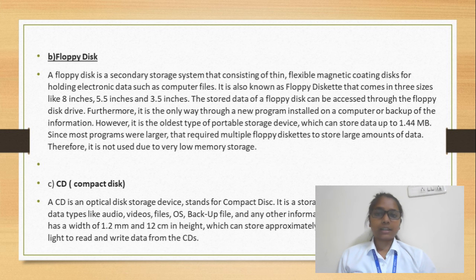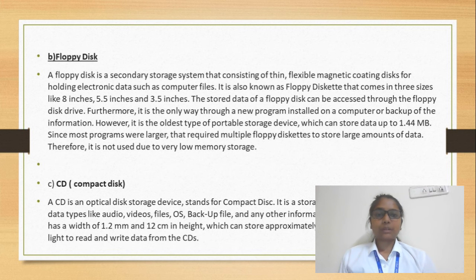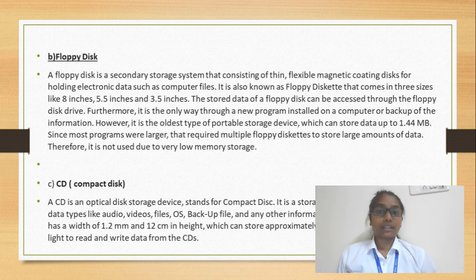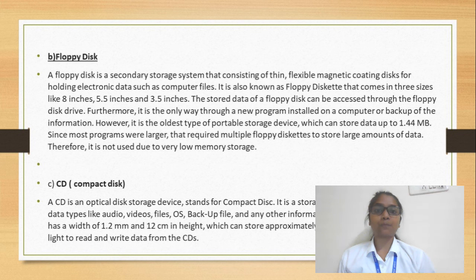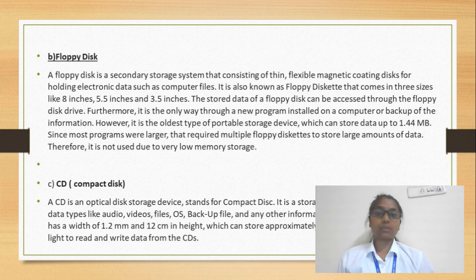A floppy disk is a magnetic and plastic-coated disk. We can transfer data from one computer to another using it. However, the storage capacity of the floppy disk is very low, which is why we don't use it anymore. Its main use was in program and software installation or backup data, allowing transfer of small files. Floppy disks come mainly in three sizes: 8 inches, 5.25 inches, and 3.5 inches.